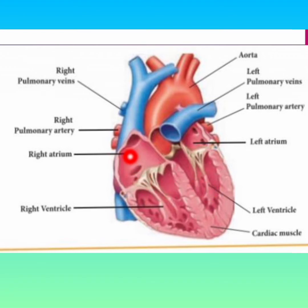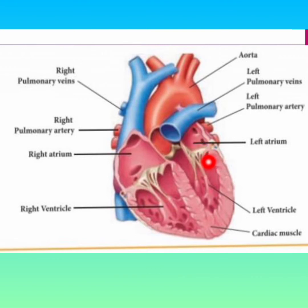The auricle and ventricle are separated in the heart. This wall separating the upper and lower parts is called the Auricular Ventricular Septum of the Heart.